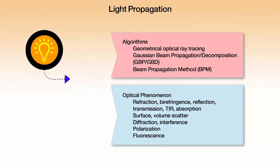Surface scatter and volume scatter. Diffraction and interference phenomena. Polarization and fluorescence. And there are actually others, but this covers 99% of systems — and you care about it when you work on the other 1%.